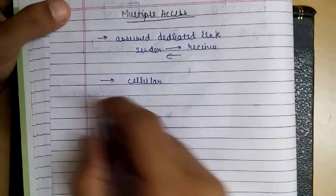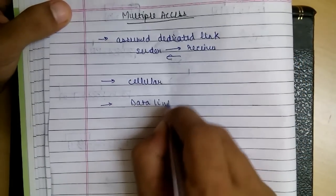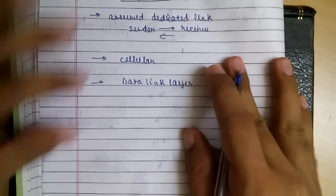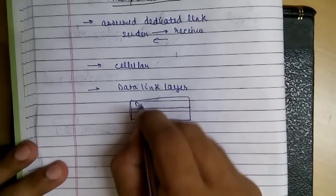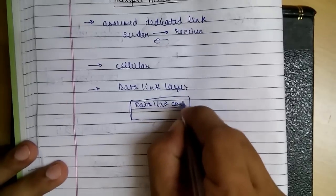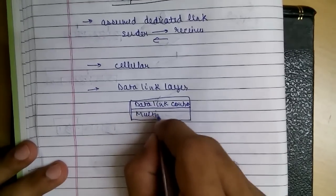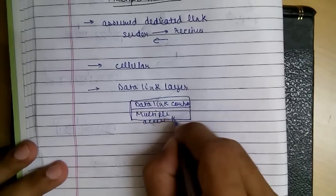So the data link layer is divided into two parts. First one is data link control, and the second one is multiple access resolution.